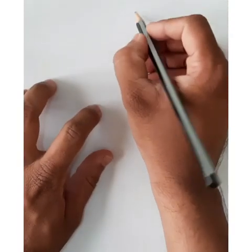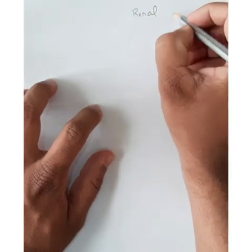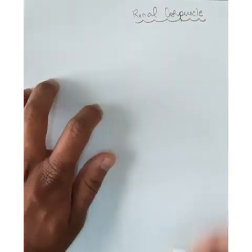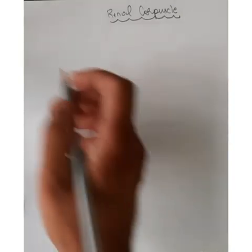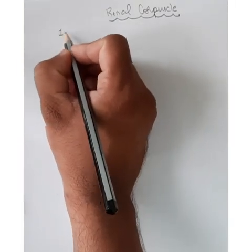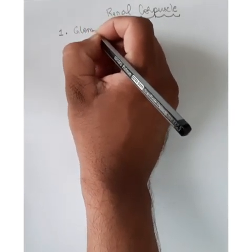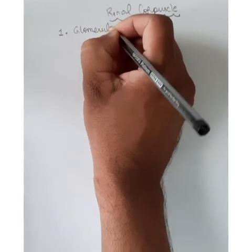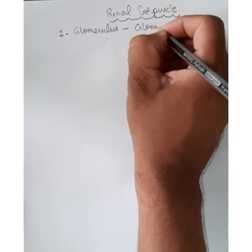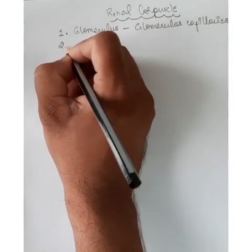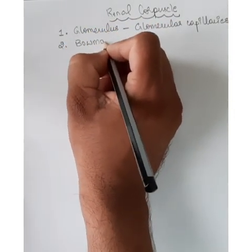Today in this class, we are going to see in detail the renal corpuscle. The renal corpuscle is made up of two important components: one is the glomerulus, also called glomerular capillaries, and number two, it is made up of Bowman's capsule.